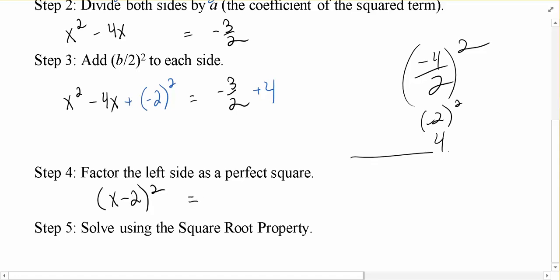Now on the right-hand side, let's do some scrap work over here. We have -3/2 + 4. 4 would be 8/2. So -3 + 8 is 5.